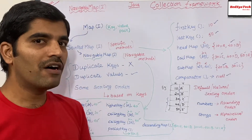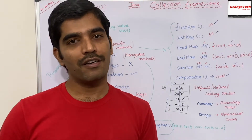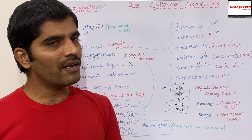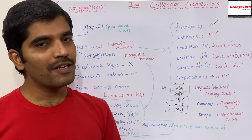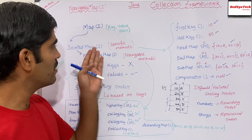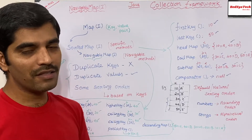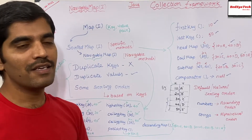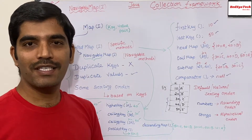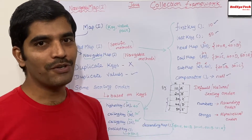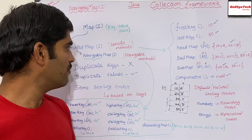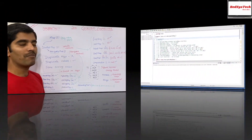Since Map, SortedMap, and NavigableMap are all interfaces in Java, we cannot create objects directly from them. There must be an implemented class for these interfaces through which we can use all these methods. We will learn about the implemented class of NavigableMap in the next video.